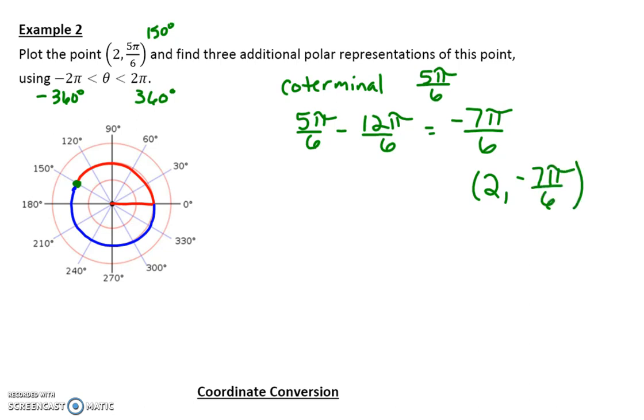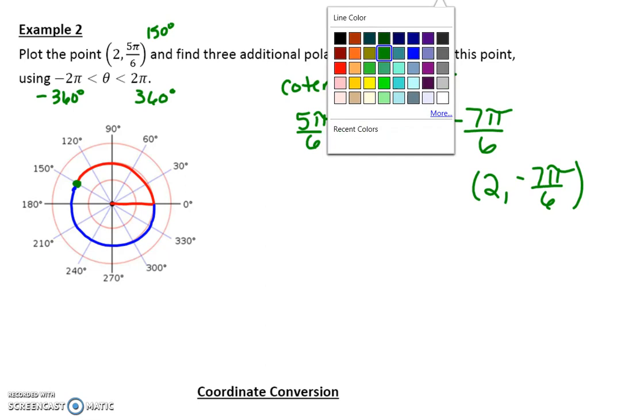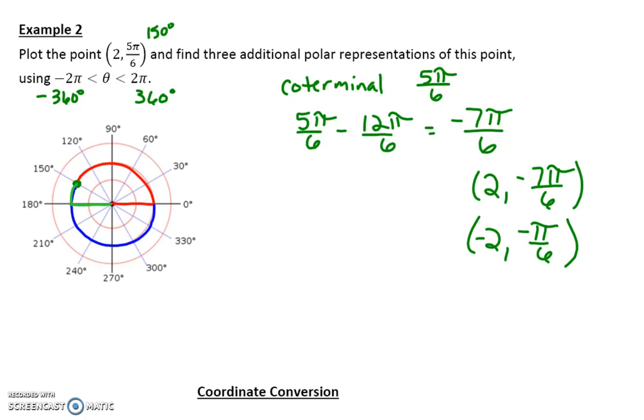We're going to take a look at a couple other ways. Because if you were to add 12 pi over 6 to the 5 pi over 6, you would be past 2 pi. So that one won't work. But there are some others that would work. If you were to go to negative 2, you could go, remember that clockwise is a negative. So you could go negative pi over 6. And so you would end up with negative 2, negative pi over 6 as another answer.